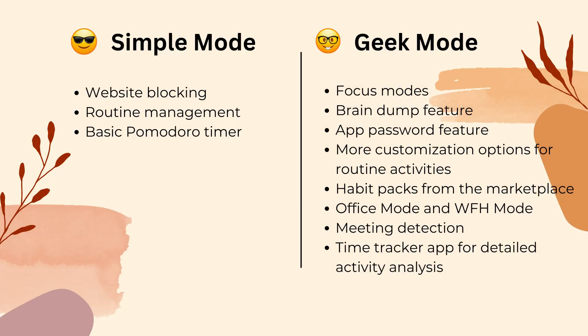In summary, Simple Mode offers only the essential features like website blocking, routines, and the basic Pomodoro timer, making it ideal for new users or those looking for a simple experience. On the other hand, Geek Mode provides advanced features like Focus Modes, Brain Dump, App Password Protection, Habit Packs from the Marketplace, Office Mode, Work from Home Mode, and advanced settings including meeting detection and a Time Tracker app.